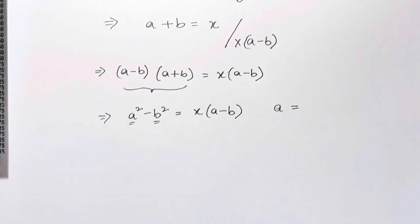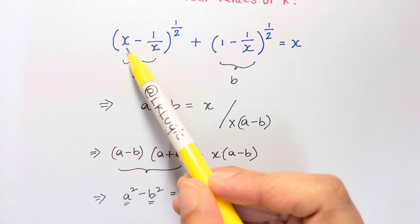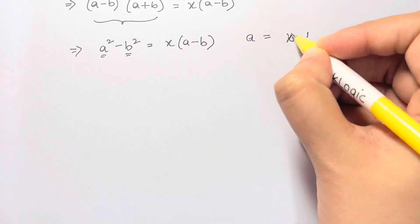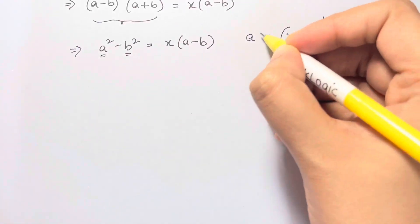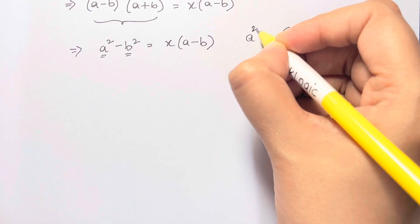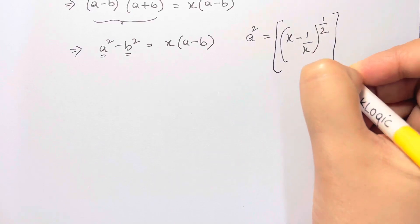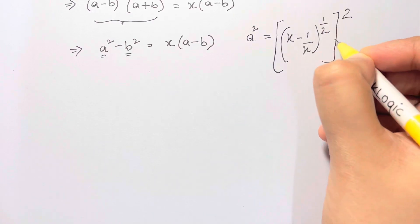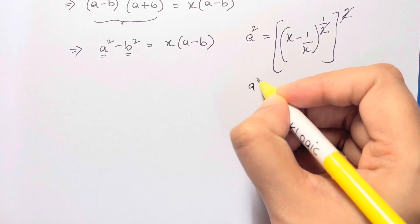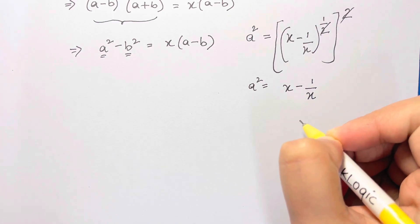a is equal to (x minus 1 over x) to the power of half. So we square both sides to get a squared. The exponents 2 and 2 cancel out, so we are left with a squared equals x minus 1 over x.